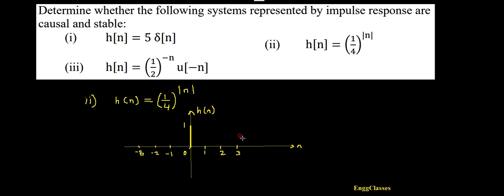On the right side, n takes positive values. If I put n equal to one, it is (1/4) to the power one, which is one-fourth — so the amplitude is 1/4. Similarly, if I put n equal to two, I get (1/4) squared, which is one-sixteenth. This pattern continues till infinity.